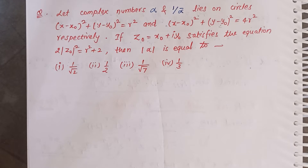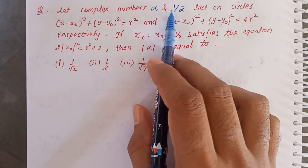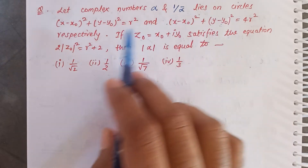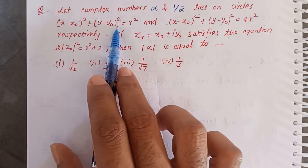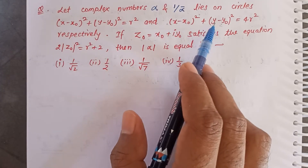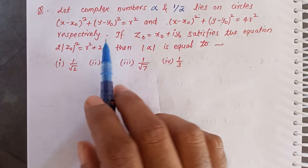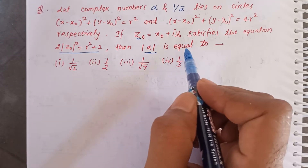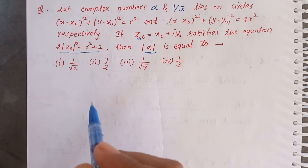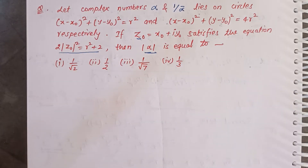Hello everybody. In today's question, the topic is complex numbers. The question states: let complex number alpha and one by conjugate of alpha lie on two circles respectively — that is, alpha belongs to one circle, and 1/ᾱ belongs to another circle. If z₀ equals x₀ plus i·y₀ satisfies a given equation, then the modulus of alpha equals what? The four options are 1/√2, 1/2, 1/√7, and 1/3.